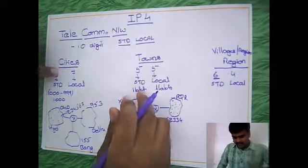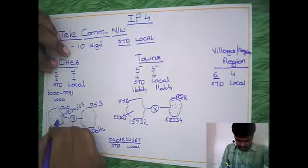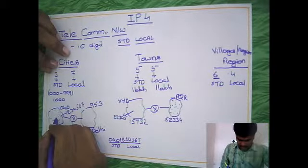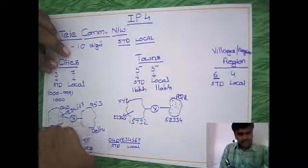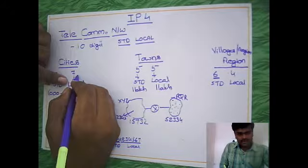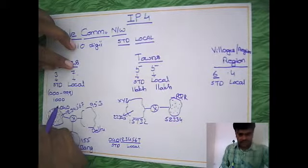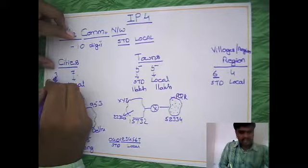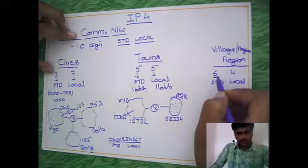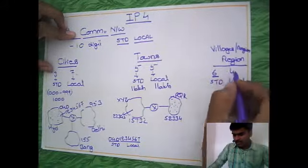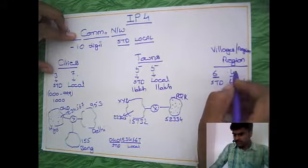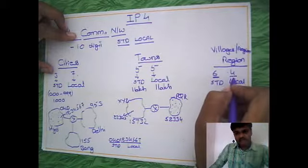In each city, you need many connections because people living in a city are more than in towns or villages, so locally you need more digits. But cities are very few altogether, so you need less digits for the STD part. Villages are more altogether, so you need more digits to represent each village, but in each village you have fewer connections, so you need less digits to represent them locally.